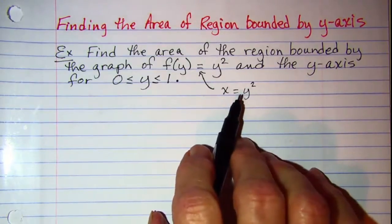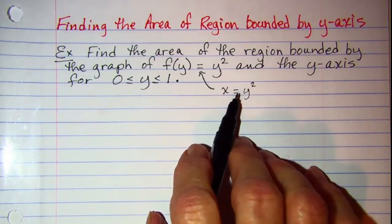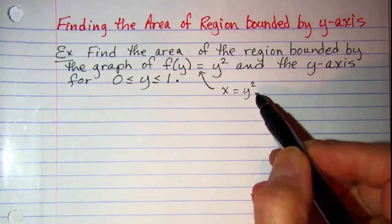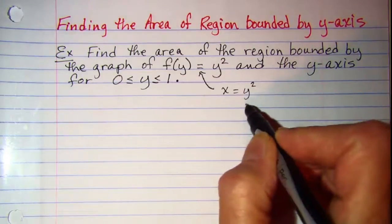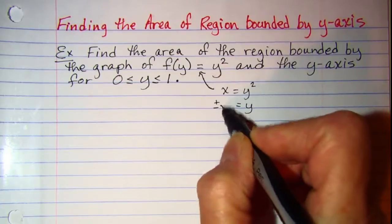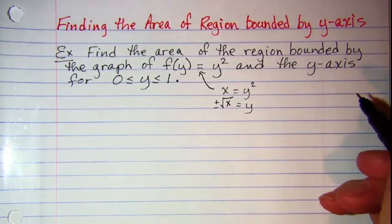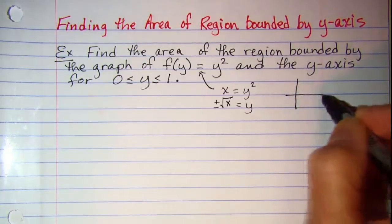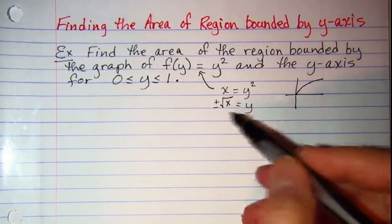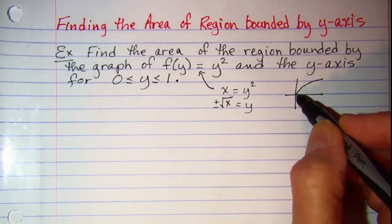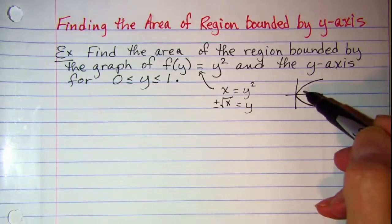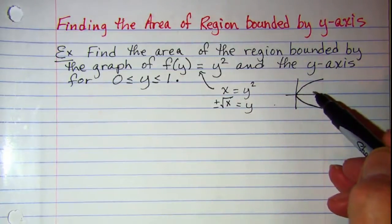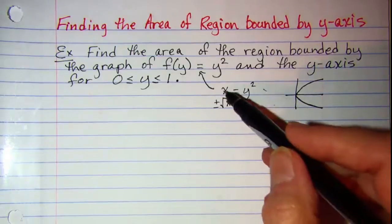Now normally also when we graph a function we graph y equals some expression. And so if we work this out and took the square root of both sides we would see that this is y equals plus or minus square root of x. Now the graph of y equals square root of x looks like this, and because it's plus or minus that means that we have a parabola that opens to the right.